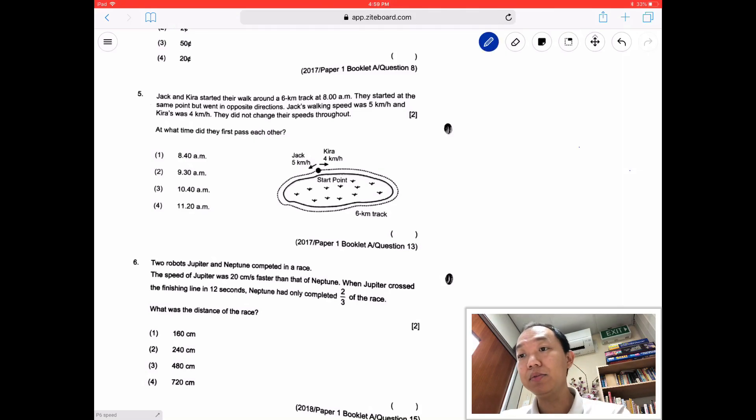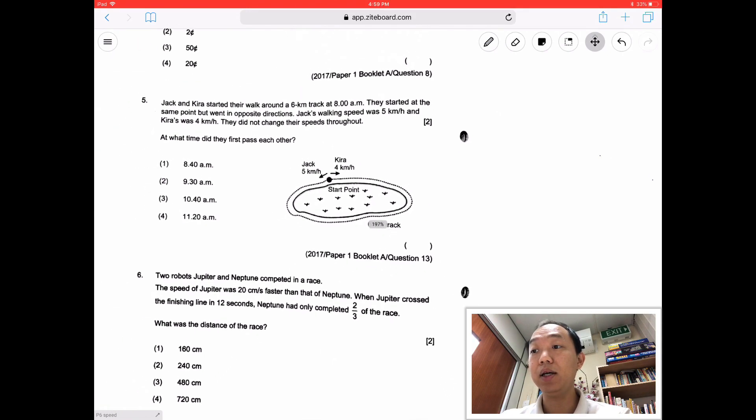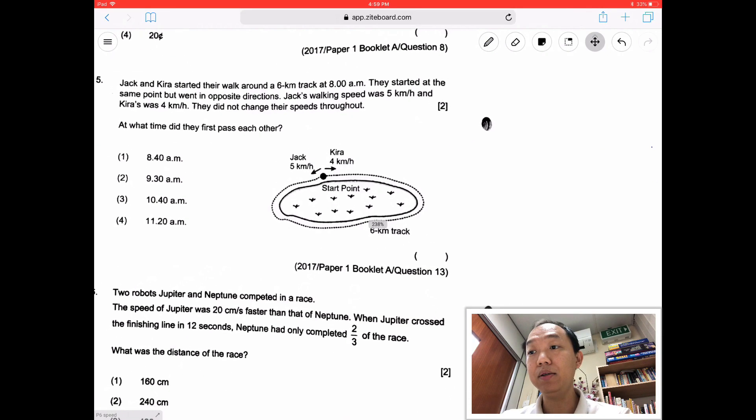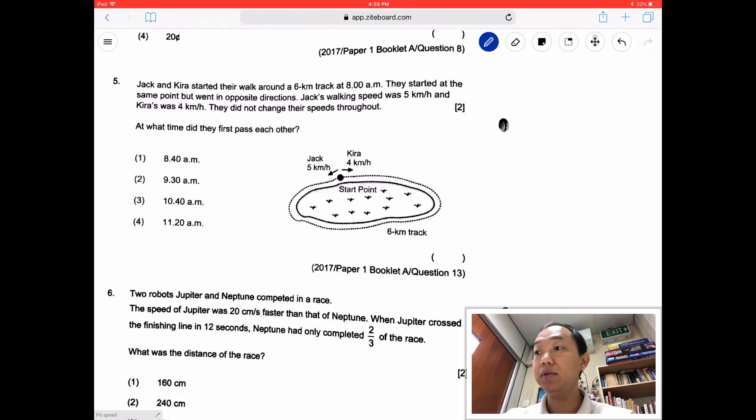So the first one that we're looking at is the 2017 paper. I found a multiple-choice question which has got to do with speed. So we've got this Jack and Kira, they're moving away from a starting point as you can see over there. Let me just enlarge it a bit. So they're moving away, and in fact if you look at this, they're actually moving towards each other. So what we do is we add the speed.